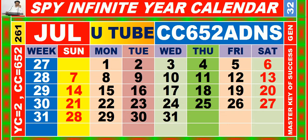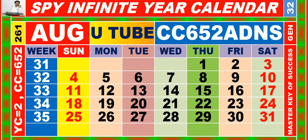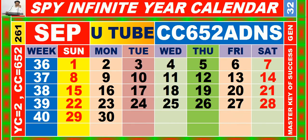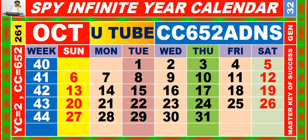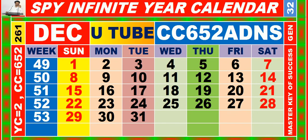Calendar for the month of July, having calendar code equal to 652. Calendar for the month of August, having calendar code equal to 652. Calendar for the month of September, having calendar code equal to 652. Calendar for the month of October, having calendar code equal to 652. Calendar for the month of November, having calendar code equal to 652. Calendar for the month of December, having calendar code equal to 652.